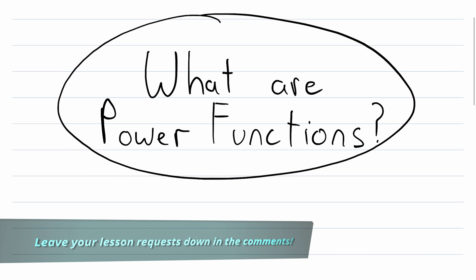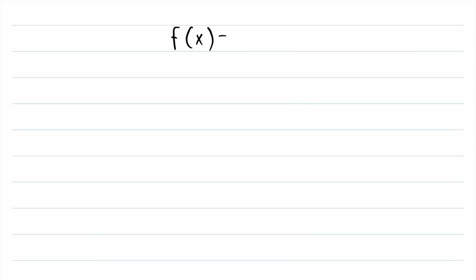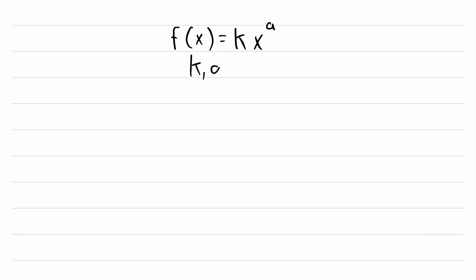What are power functions? That's what we'll be going over in today's Wrath of Math lesson. Power functions are functions that look like this: f of x is equal to some real number coefficient k multiplied by our variable x raised to the power of another real number, a. Both k and a are just constant real numbers. An example of a power function would be f of x equals negative 3 times x to the power of 2. We've got a real number coefficient being multiplied by our variable raised to a real number power.